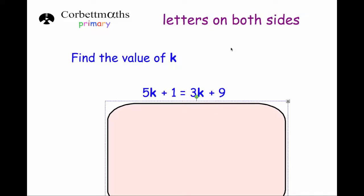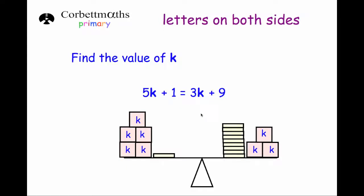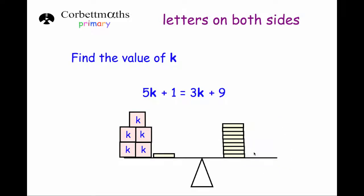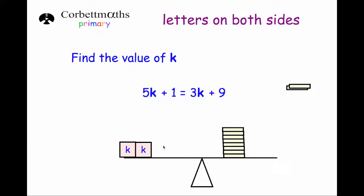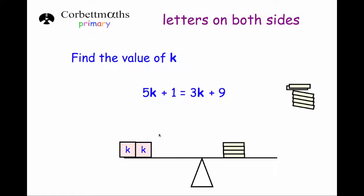I'm going to quickly show you this represented on a balance. If I wanted to find the weight of one of these blocks, k, the first thing I would do is take off three of the blocks on each side to keep the scales balanced. That would leave me knowing that 2k equals 8, and halving that gives k equals 4.